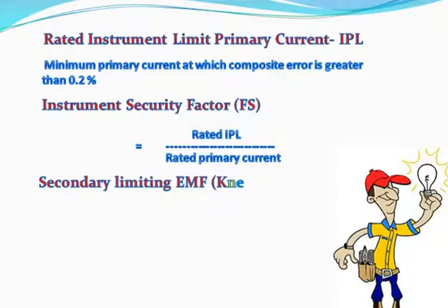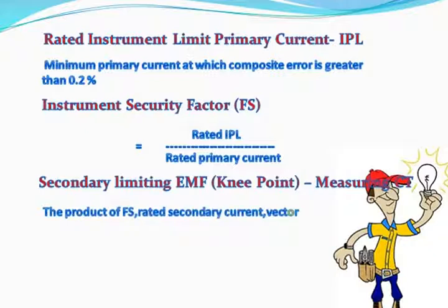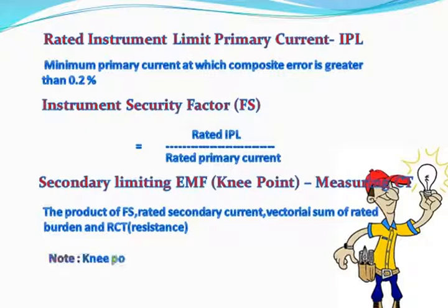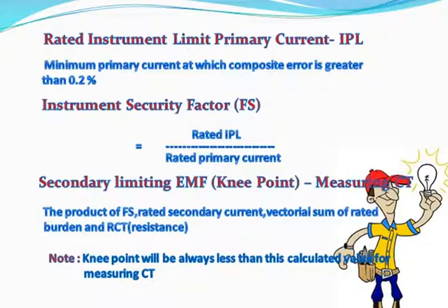The knee point, that is the secondary limiting EMF for measuring CT, is the product of FS, rated secondary current, and the vectorial sum of rated burden and RCT. Please note that the knee point will always be less than this calculated value for measuring CT.